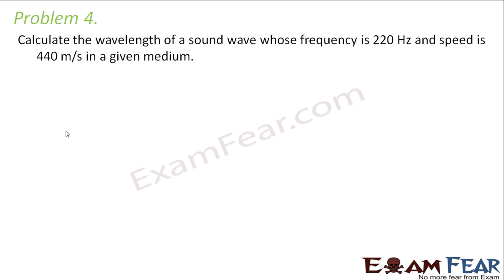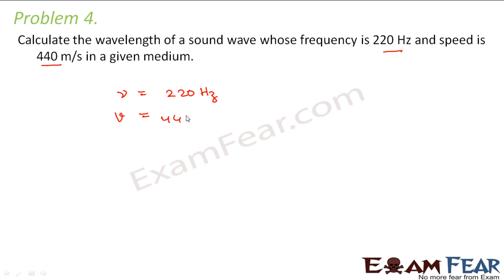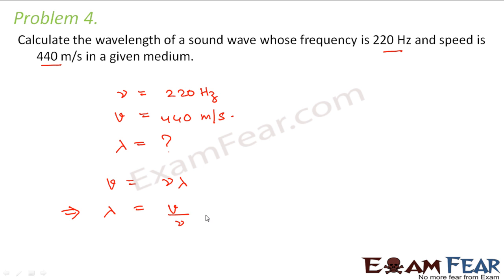Problem 4: Calculate the wavelength of a sound wave whose frequency is 220 Hz and speed is 440 m/s in a medium. Using the relation: speed = frequency × lambda, we get lambda = V / nu = 440 / 220 = 2 meters. So the wavelength of the sound wave is 2 meters.